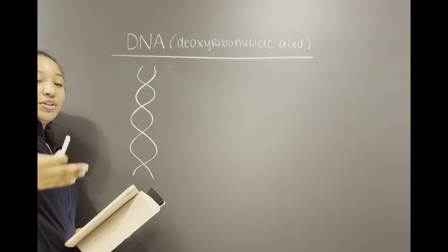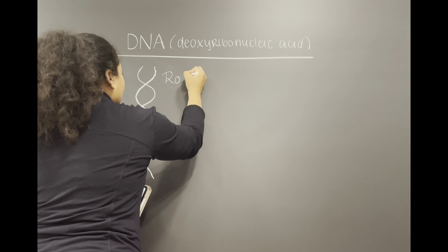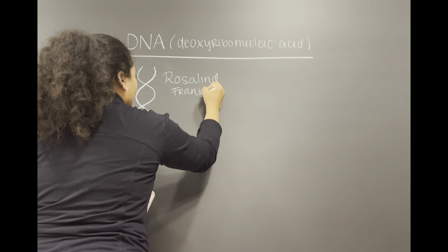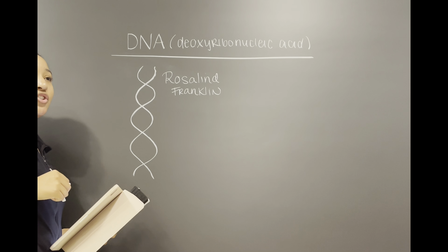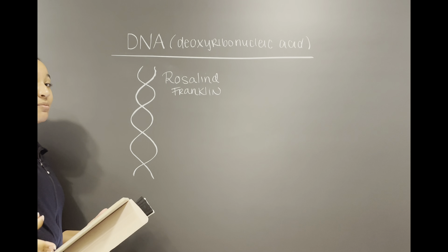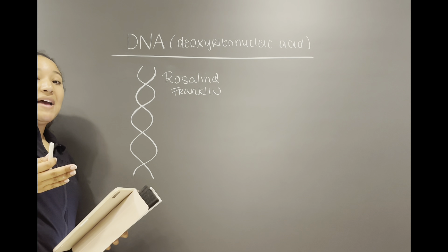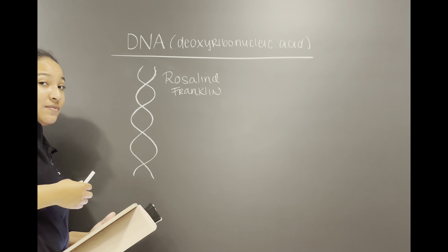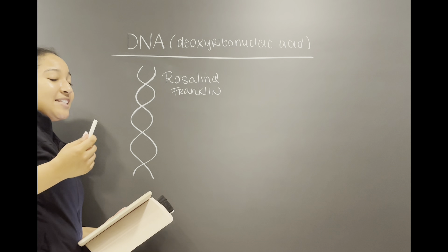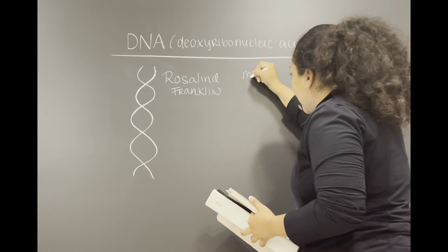Before we get into the structure of DNA, I want to mention Watson and Crick, who are most viewed as finding the structure of DNA and being really important in the biological community. But I also want you to keep in mind that Rosalind Franklin was another biologist who used x-ray crystallography to find this DNA structure, also called the double helix.